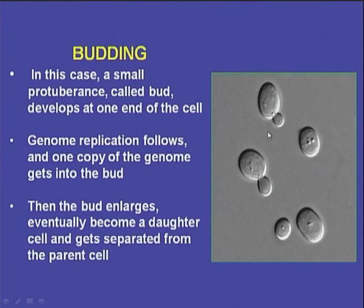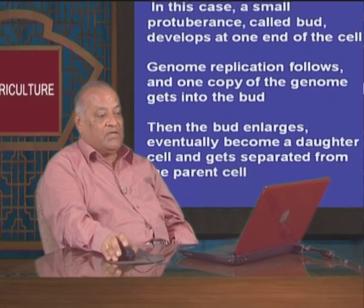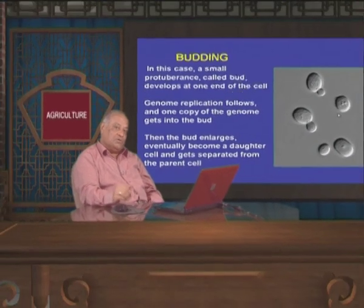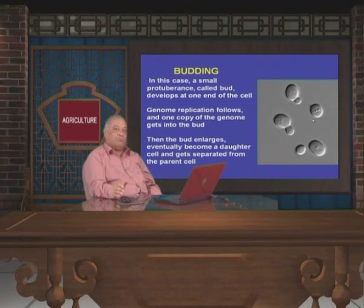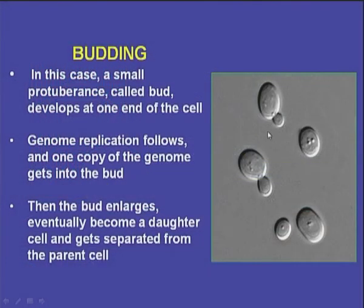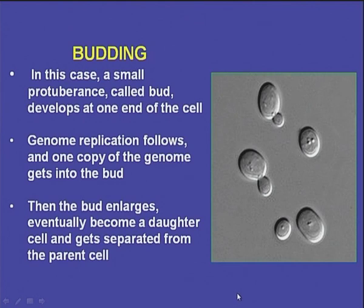In budding — as we have seen in fungi with yeast-like structures — bacterial cells also reproduce vegetatively through budding. The bacterial cell shows a small protuberance called a bud, which develops at one end of the cell. Genome replication follows and one copy of the genome gets into the bud. The bud then enlarges, eventually becomes a daughter cell, and gets separated from the parent cell, resulting in two cells.